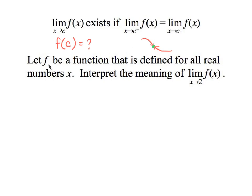Let f be a function defined for all real numbers x. Interpret the meaning of this — where c is now 2. What we'd normally say is: what's f(2)? Plug 2 into the function and see what you get. But what if that was undefined? What if something weird is happening there? And that's the beauty of the limit — it lets us see what we're getting from both sides.